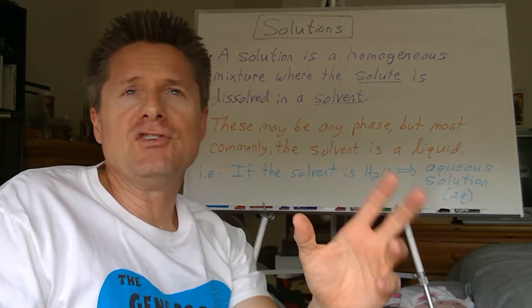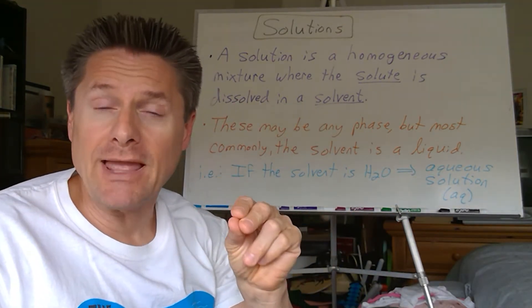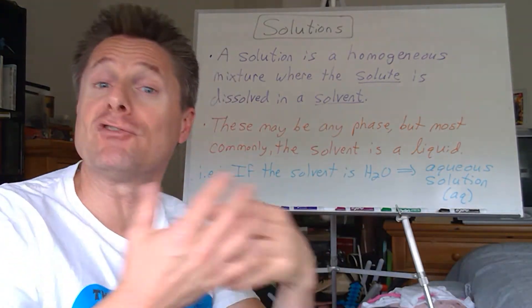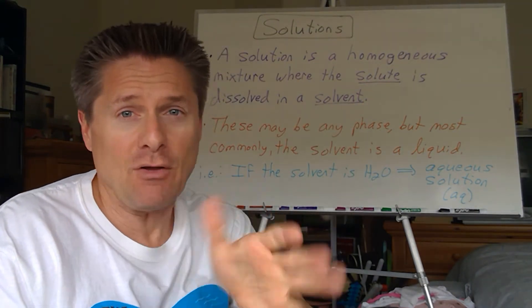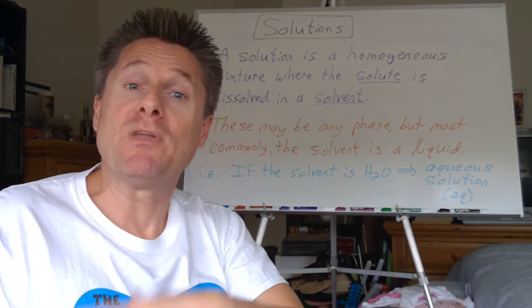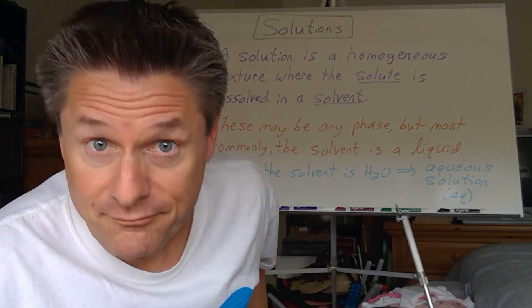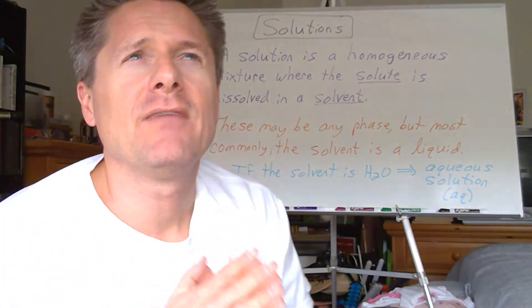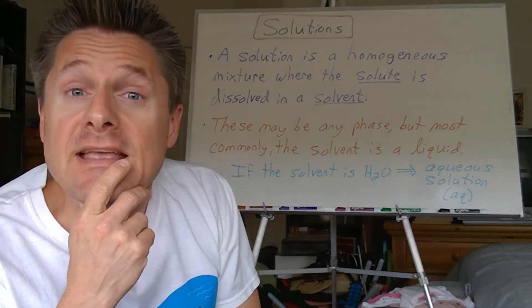So what we need to be able to do when we're doing reactions and quantitatively looking at them doing stoichiometry, we need to extract out of the mixture, the solution, the information of the reacting species, the solute. Because the solvent usually is not what's reacting. So we have to kind of ignore that. But the information given to us is about the solution as a whole. And real quick, the solution, the homogeneous mixture, and we looked at this a couple chapters ago, can be any phase, right?